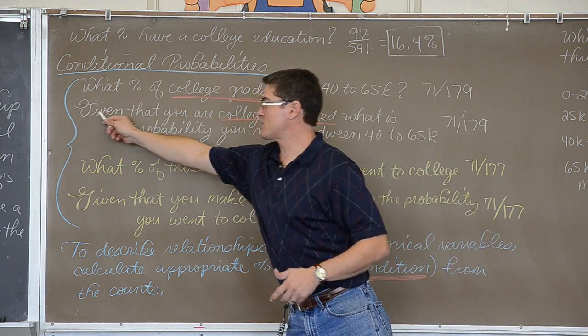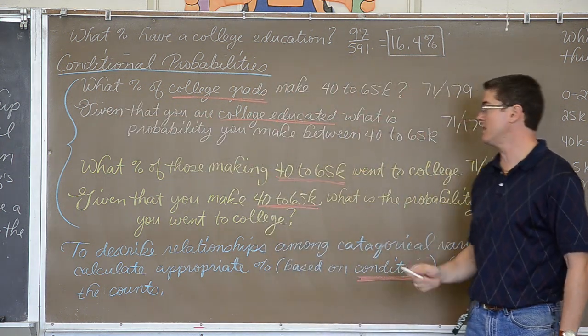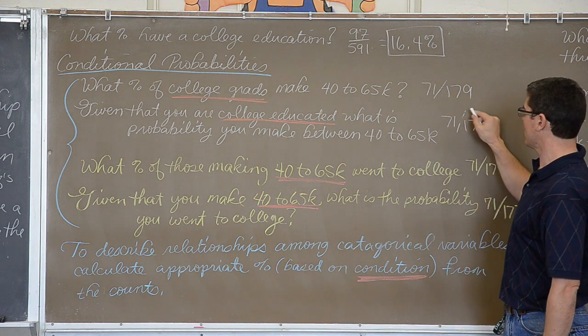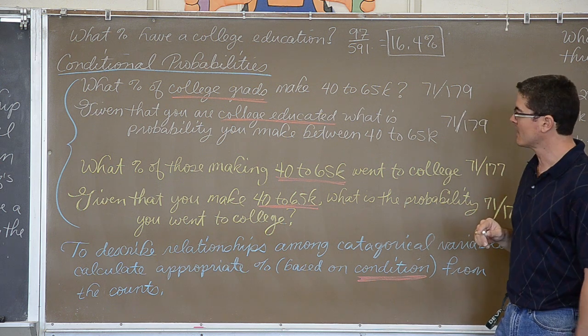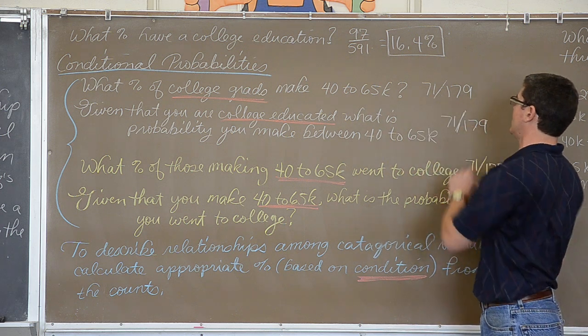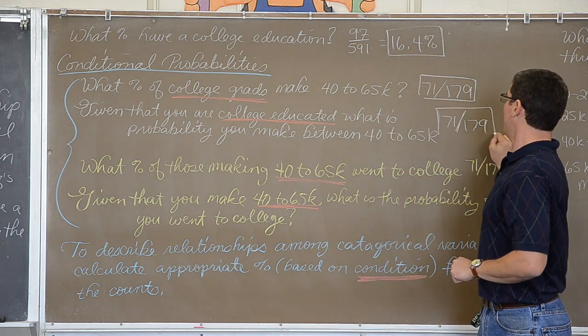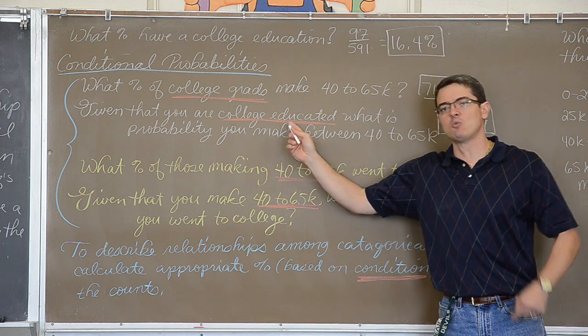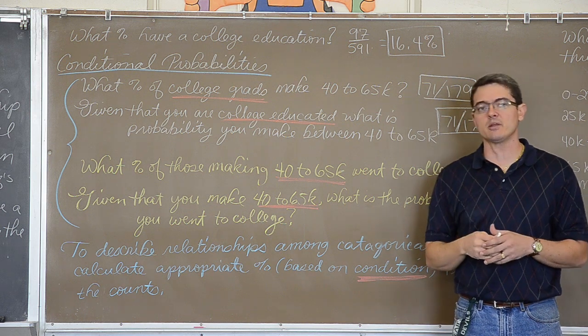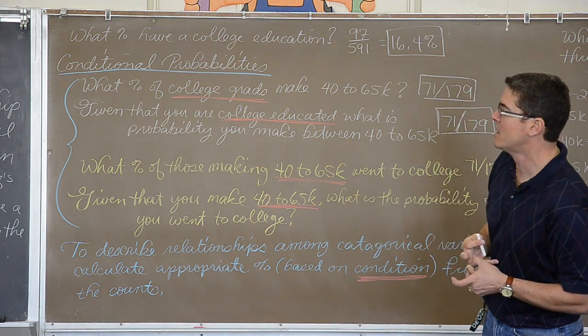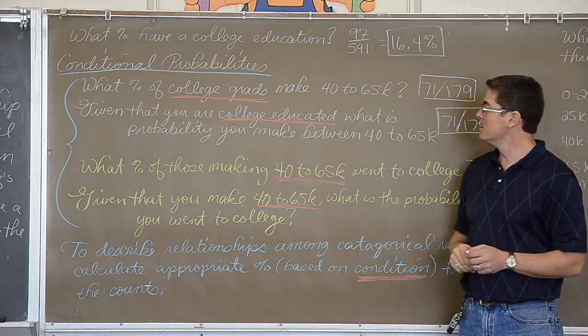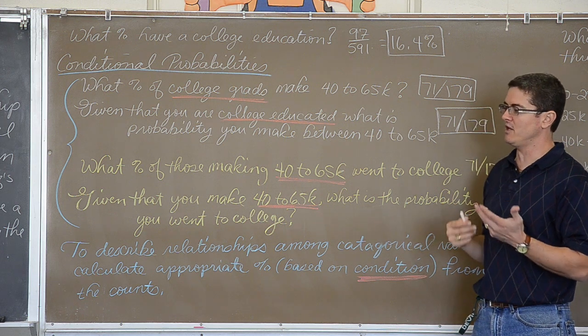So, and then, or this is the same question, given that you are a college educated person, what is the probability you make between 40 and 65,000? Again that is 71 over 179. So these two questions are both giving you the same fractional answer or the same percent, 71 over 179. But the second one is more blatantly telling you what the condition is. I don't want to know all the people that make between 40 and 65,000. I only want to talk about those that graduated from college. So the 179 as opposed to the 591.